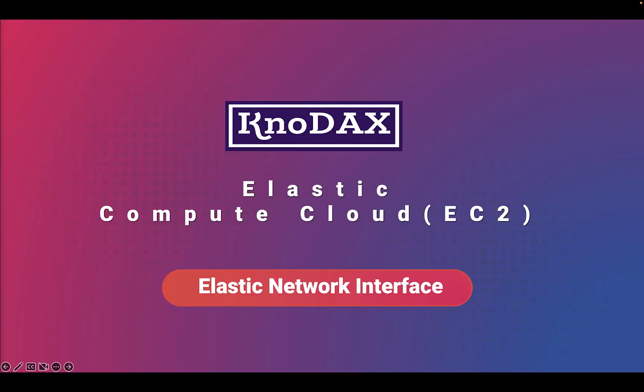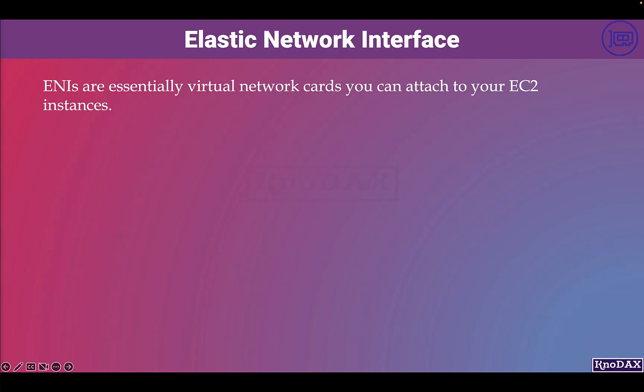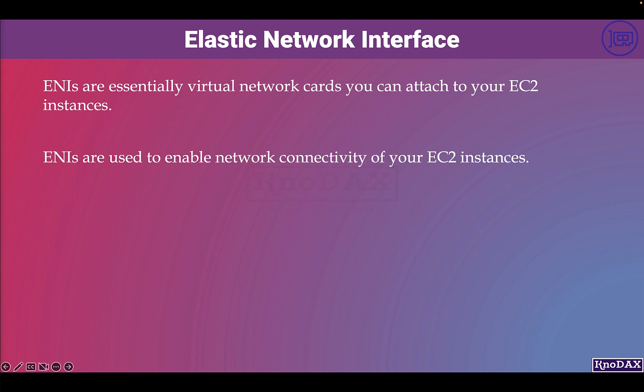Welcome back. This lecture is about Elastic Network Interfaces. Elastic Network Interfaces, ENIs, are essentially virtual network cards you can attach to your EC2 instances. ENIs are used to enable network connectivity of your EC2 instances.